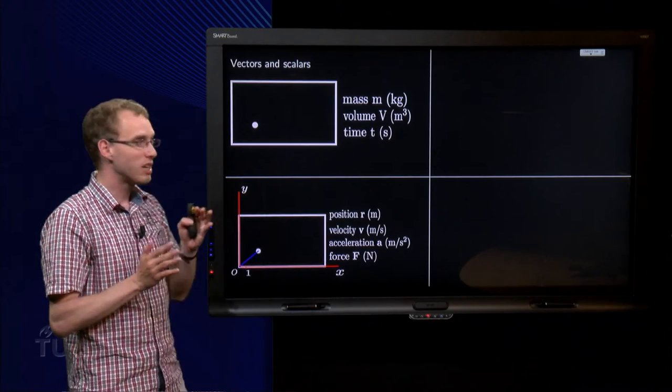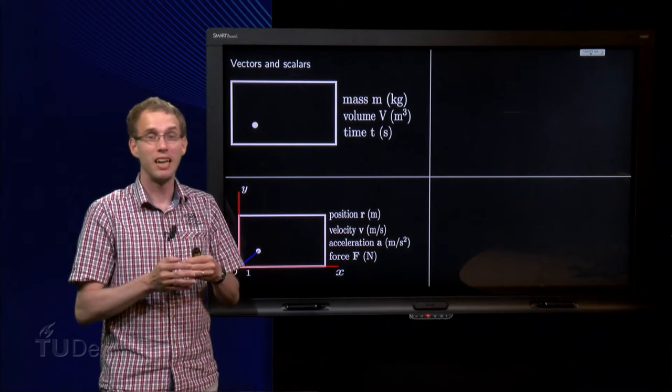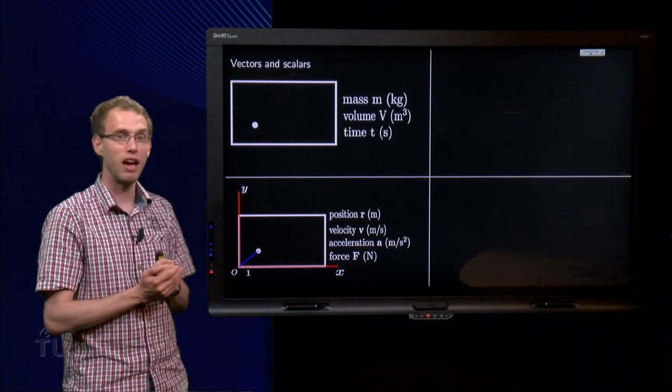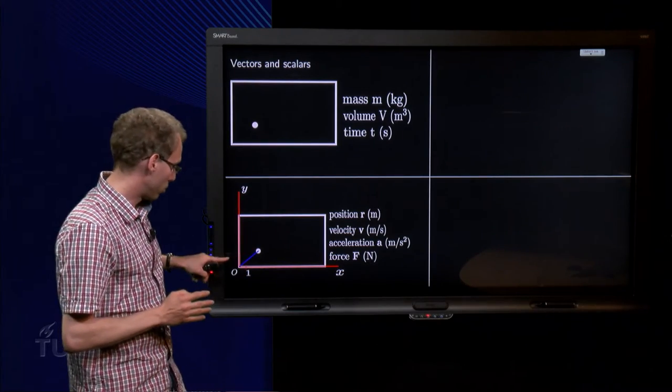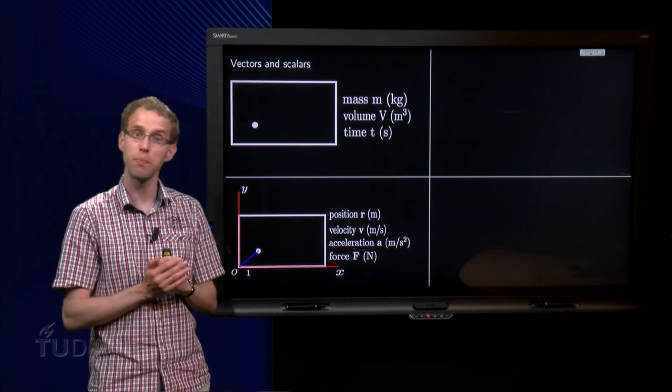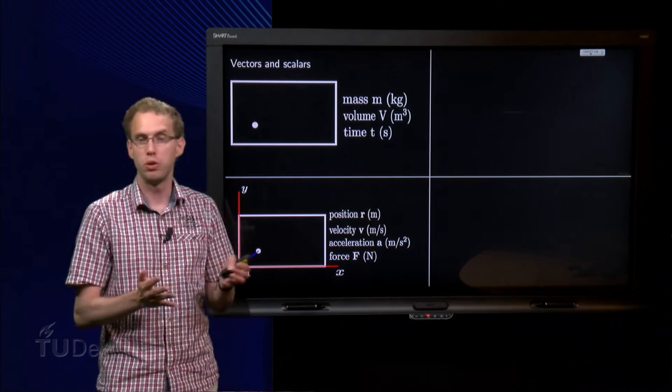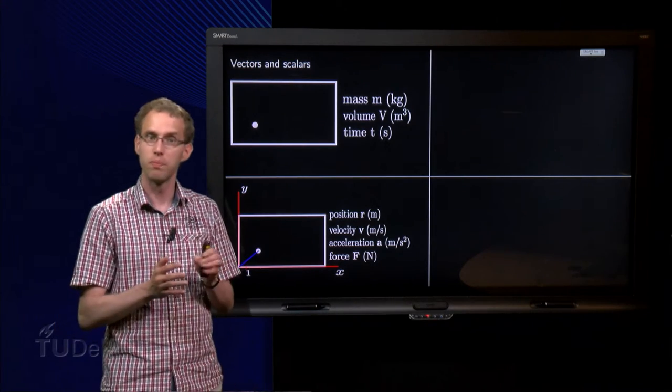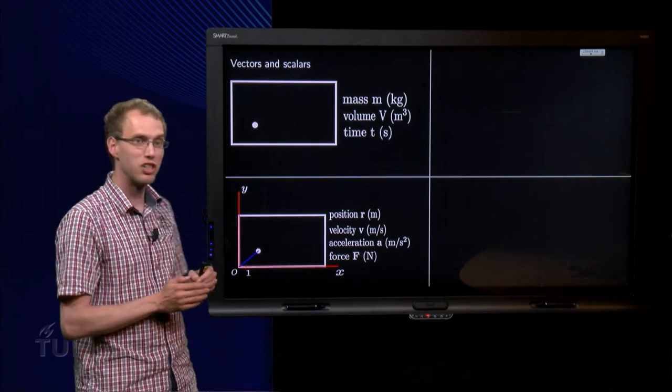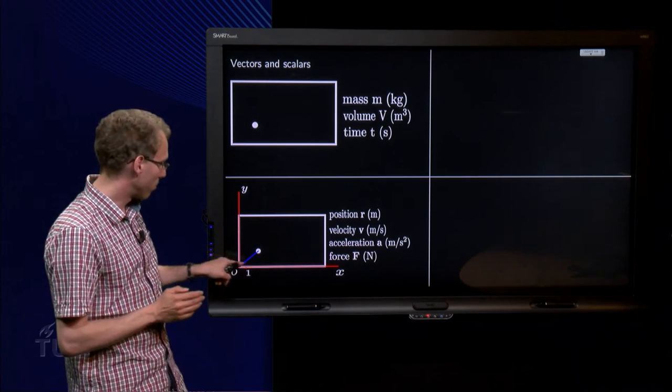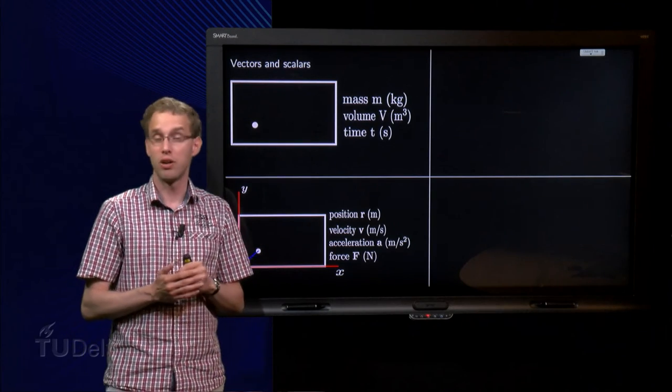But now, what if we want to describe where the ball is, if we want to describe its position? Then we cannot just give a number, then we have to make a construction like this, then we need vectors. We have to choose an origin, somewhere, say in the corner over here. We have to choose a coordinate system, x and y axis, and some units. I put the one over here. Some scale. And then the position of the ball is described by a vector consisting of two components, an x and a y component, which tells us where the ball is. Position are also in meters.